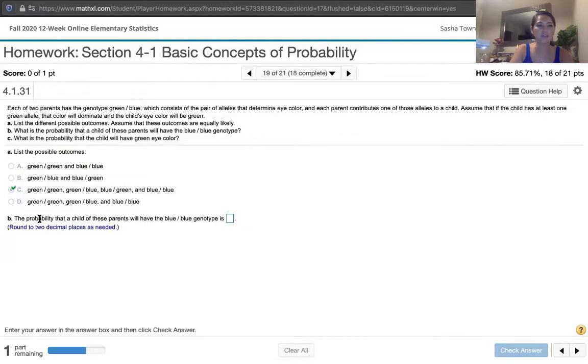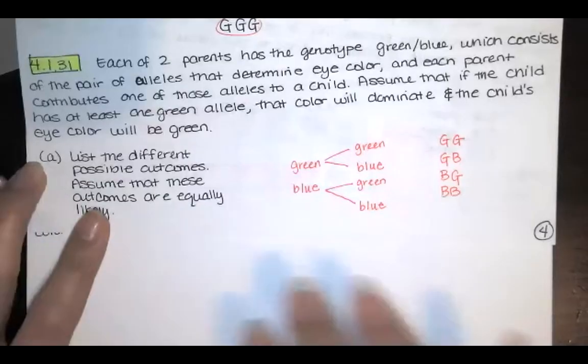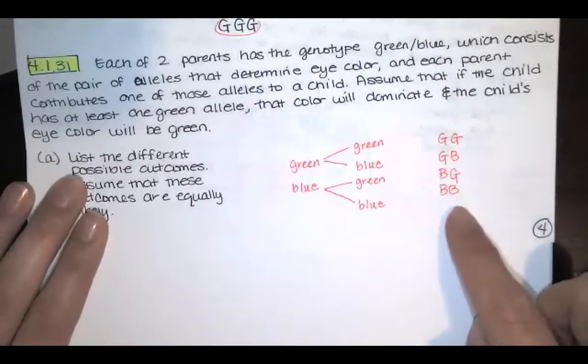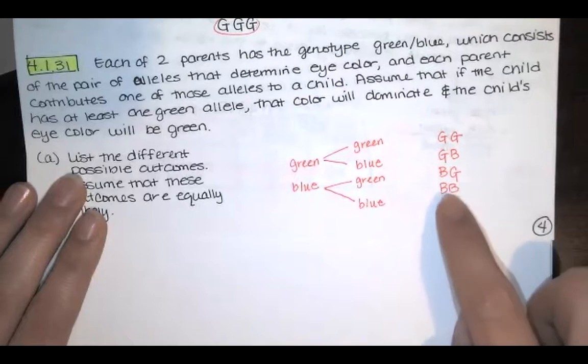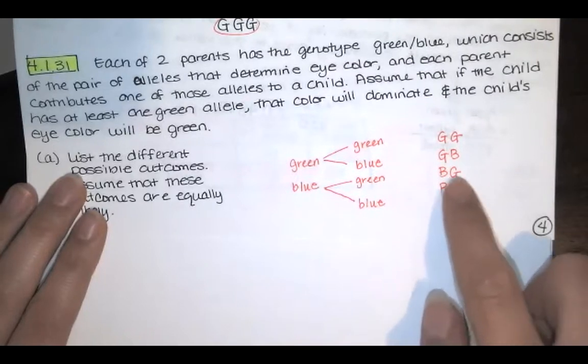Okay. And then the question says, what is the probability that a child of these parents will have the blue-blue genotype? Well, let's look at that paper again. If all of these are equally likely, the chance of getting a blue-blue is just one out of four.